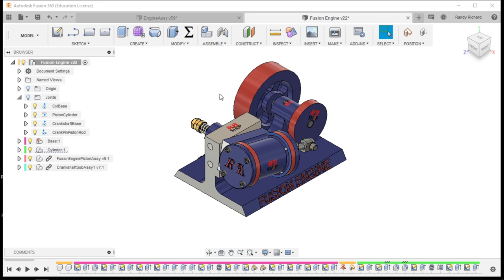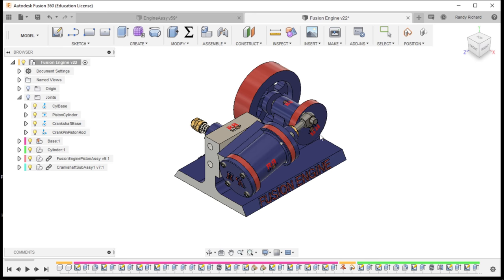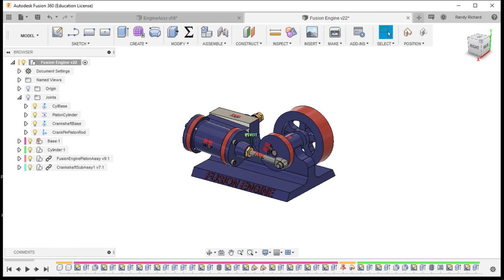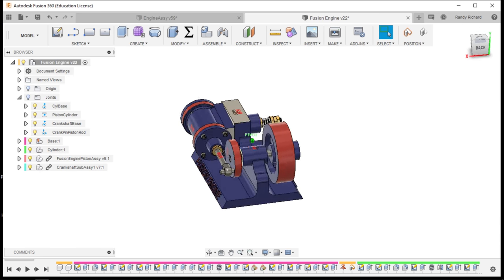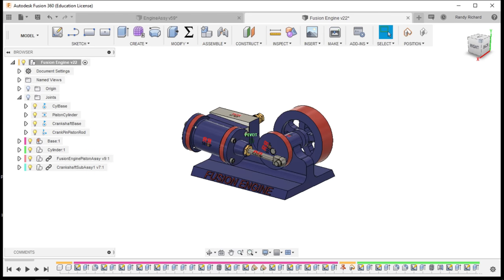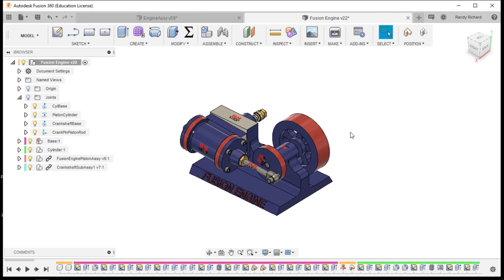And we also did the crankshaft assembly, right? And so that all functions, right? If I can get it to turn right. Anyway, it functions. And we worked our way through that whole series. So everybody at home, if you had Fusion, you could work yourself along with it and build your own animated model.